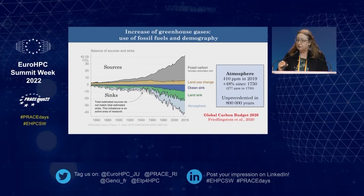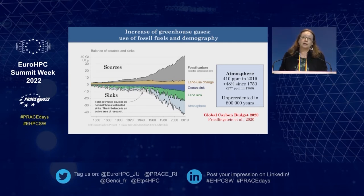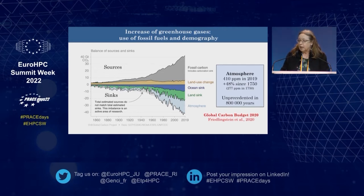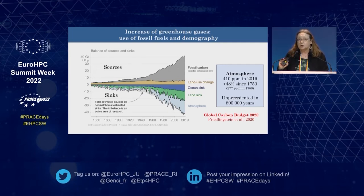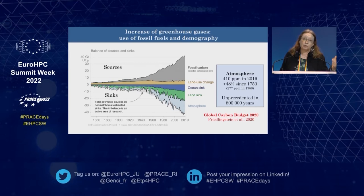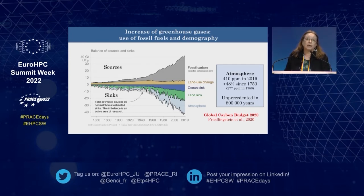Below zero you have the sinks. The atmosphere is the light blue, where we reach 410 parts per million in 2019 compared to pre-industrial times — an increase of 48%; we were at 277 parts per million. This is unprecedented in the last 800,000 years as seen from deep ice cores. We are fortunate: only half of the CO2 we emit stays in the atmosphere. So whether the two are related — for that, we need the models.